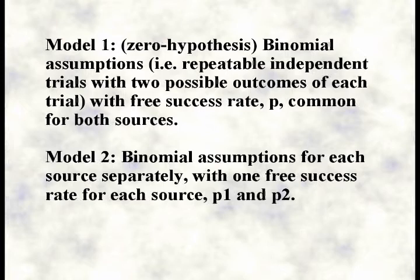So that's two separate binomial setups and two free parameters: p1, the success rate for trials from source 1, and p2, the success rate for trials from source 2. To reiterate, this hypothesis testing will be 1 free parameter versus 2, rather than the earlier 0 versus 1 parameter. You could also describe the null hypothesis as a special case of the alternative, namely the case where p1 is equal to p2.